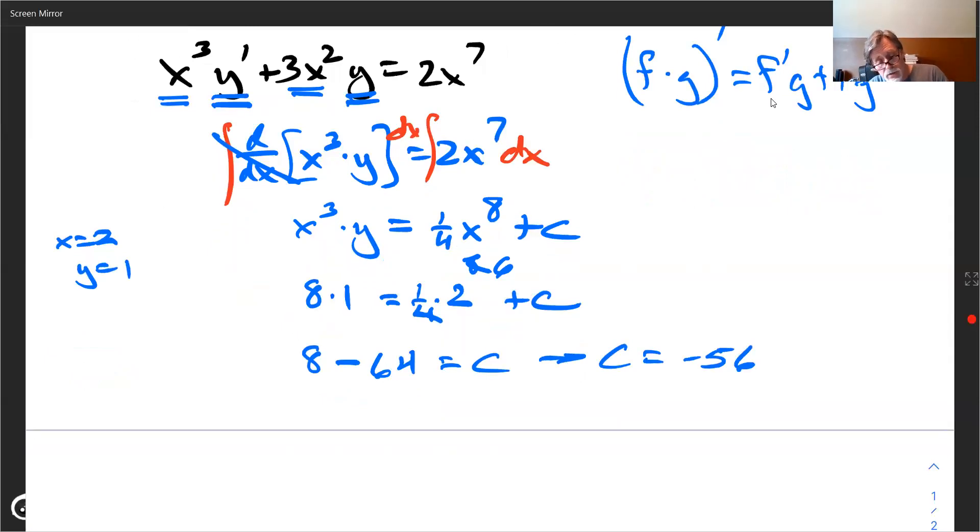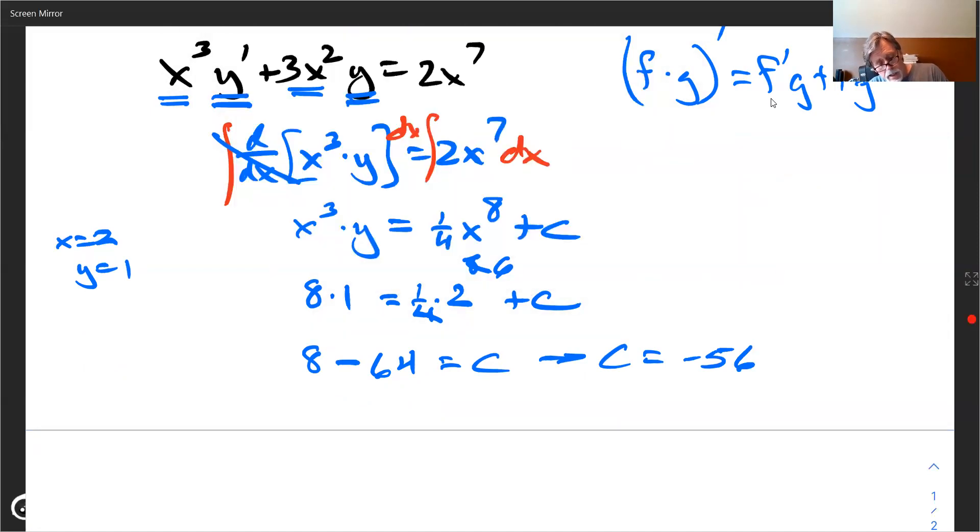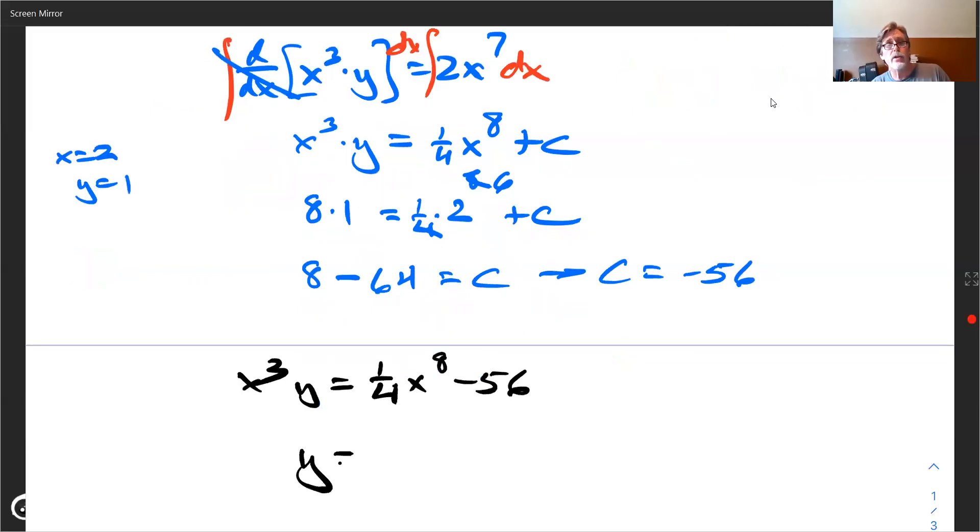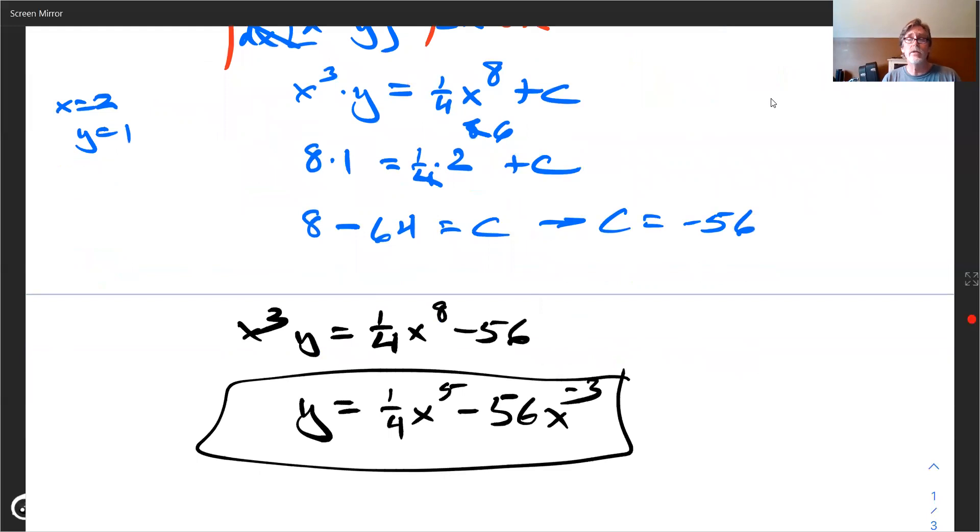So our almost answer is this. I'll put this in bold black. I'll say, therefore, x cubed y is equal to one fourth x to the eighth minus 56. And now it's, you're supposed to, here's your function, y equals one fourth x to the fifth, and then minus 56, maybe x to the negative three. And folks, that's how you solve these so-called non-separable differential equations.